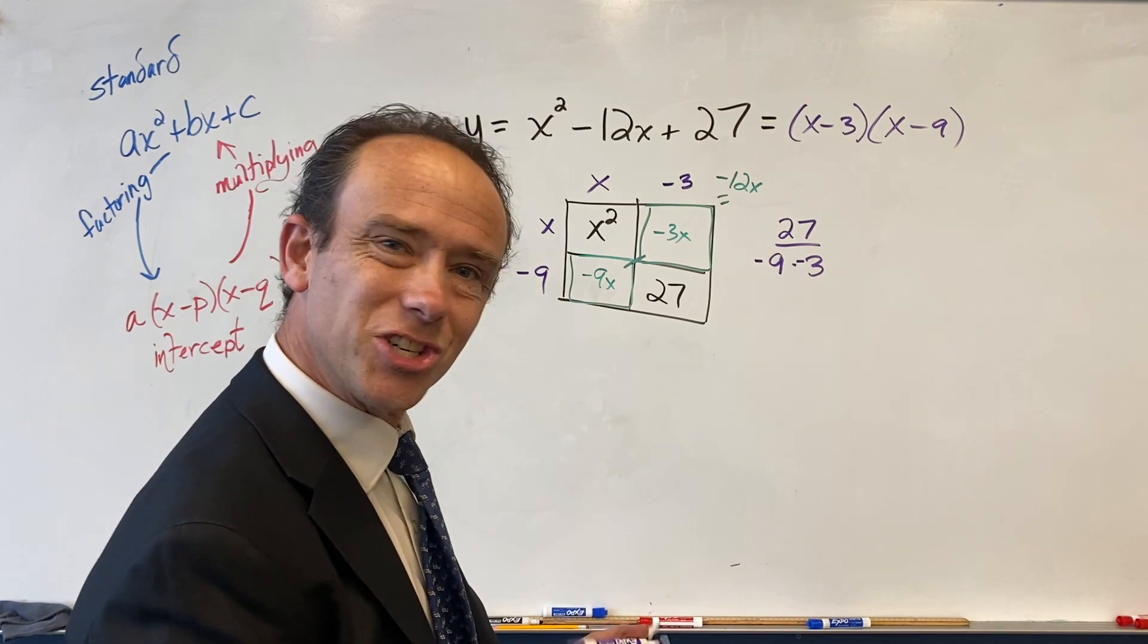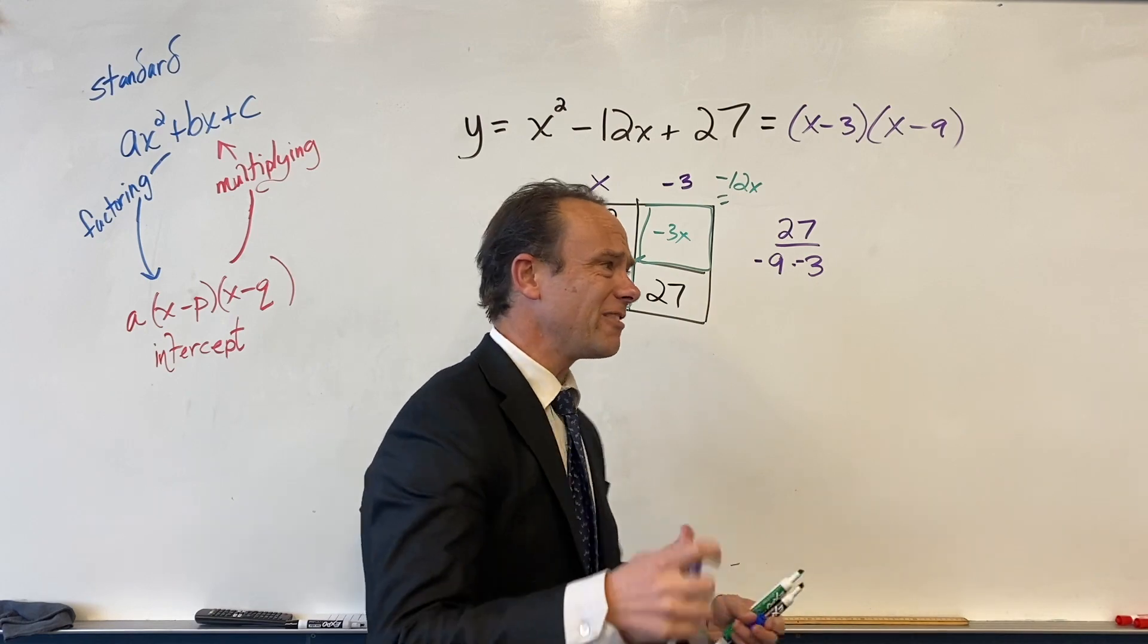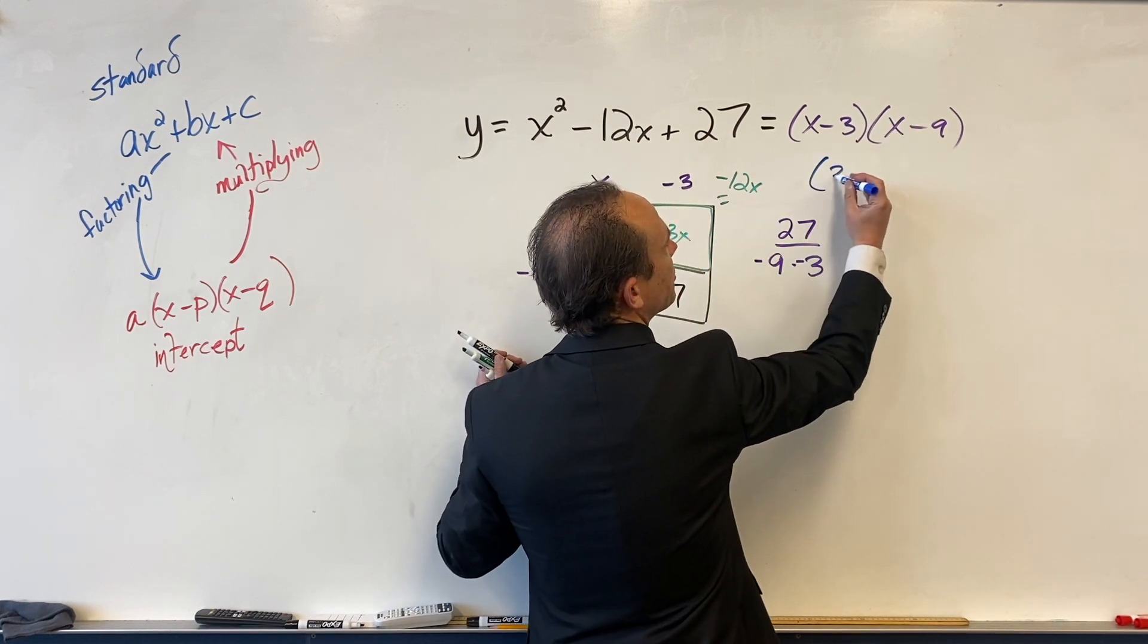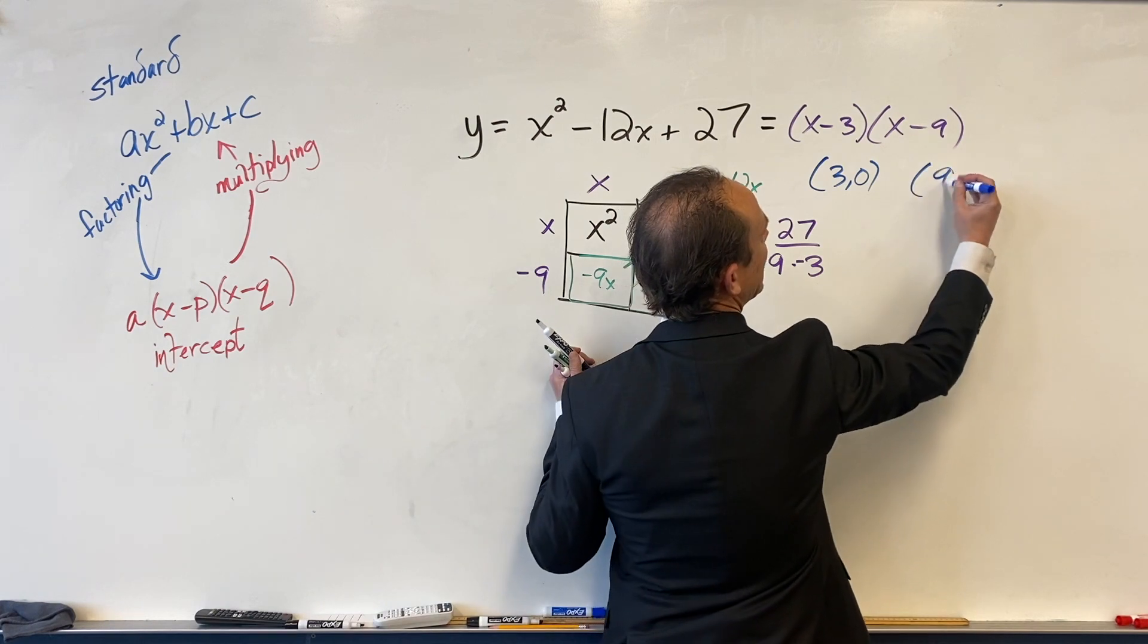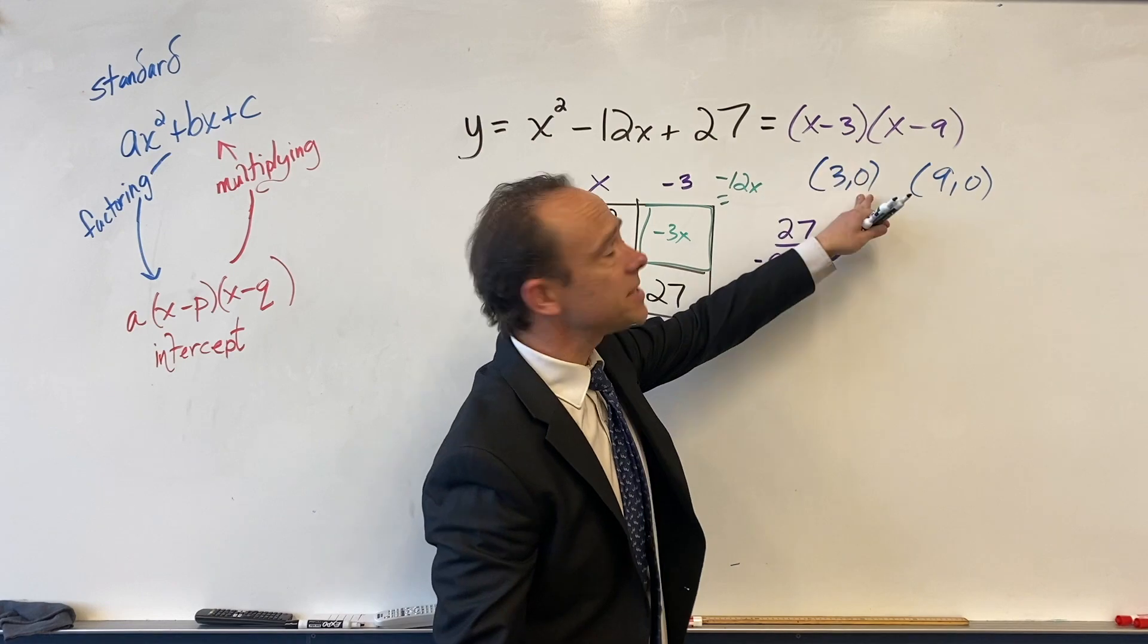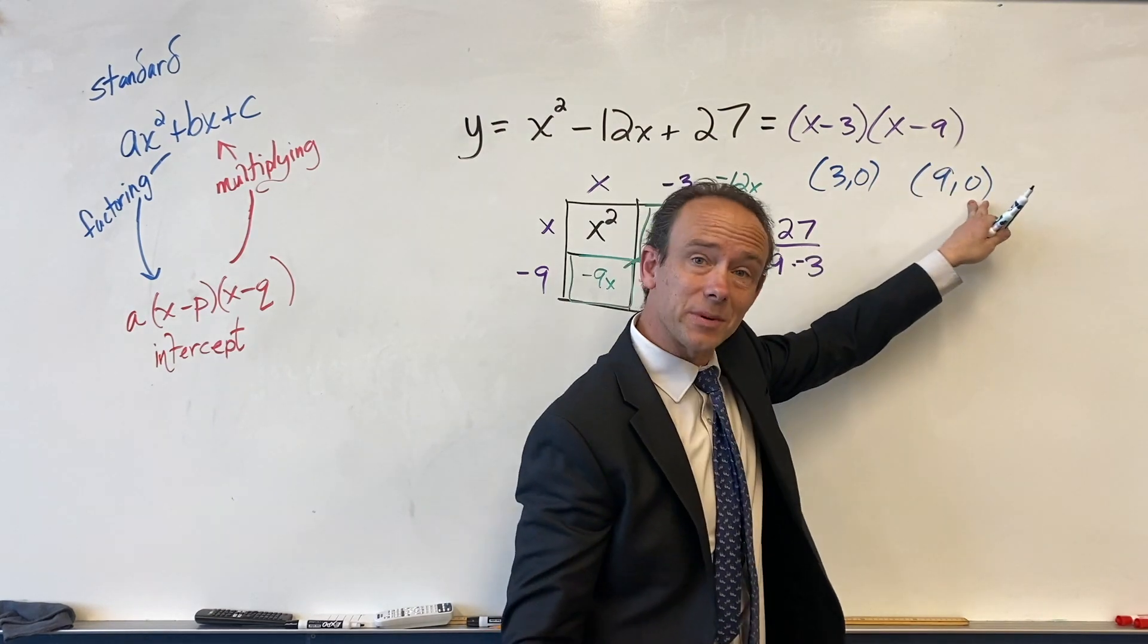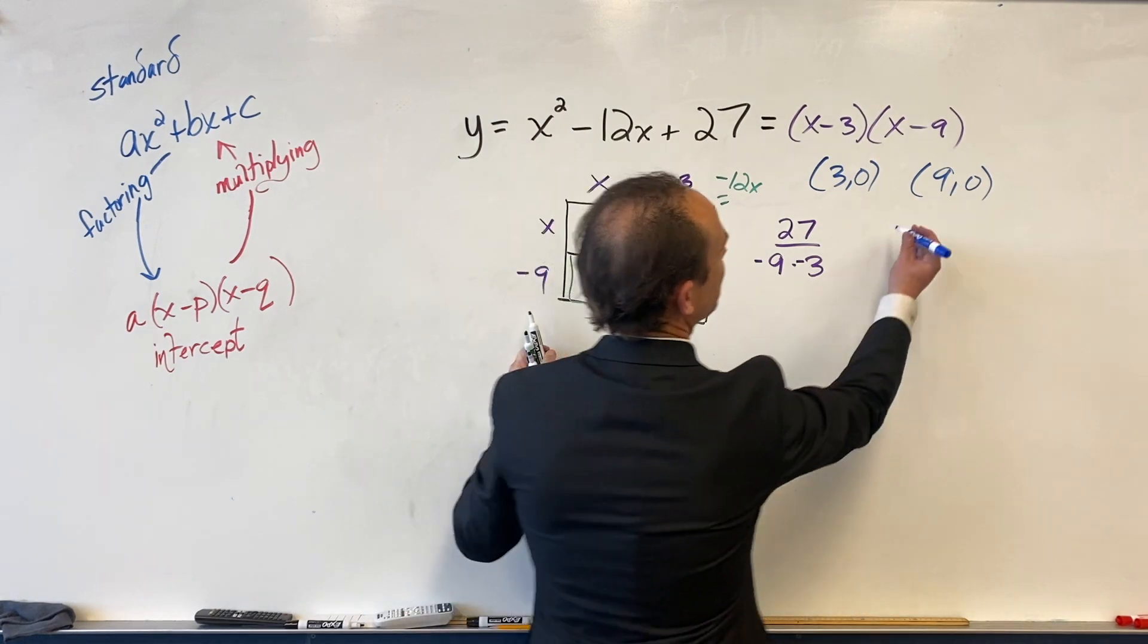So then where are its x-intercepts? Let's just use mathematical structure on this one. Let's go - I don't know, I don't have much of a color scheme here today. I don't know why I'm picking the colors I'm picking, but I'm going to go to blue. 3 comma 0, that's the first x-intercept, and 9 comma 0. Because 3 is how we get to zero, that's how we get to zero. 9 - 9 minus 9 is also how we get to zero.